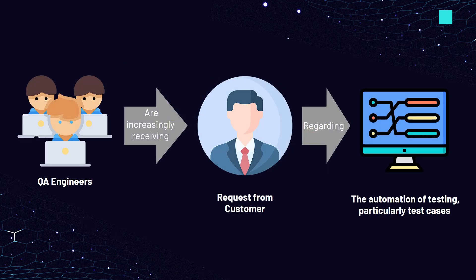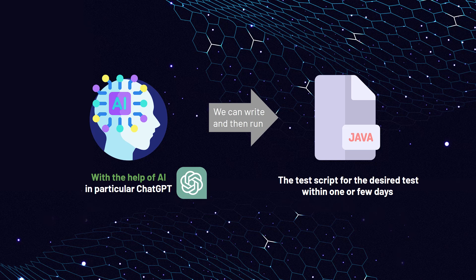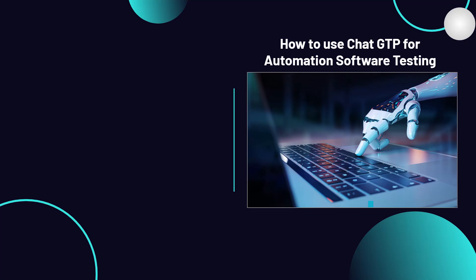These lectures cover the manual part of the course. However, it's just halfway through the journey. In today's world, manual testers are increasingly receiving requests from clients regarding the automation of testing, particularly test cases. Of course, to become a QA automation engineer, you need to start your QA career from scratch and gain deep knowledge in this area. However, with the help of AI, particularly ChatGPT, a manual QA engineer can learn how to successfully write and then run the test script for the desired test case within one or a few days. For that reason, we have prepared the next part of the course, which is about how to use ChatGPT for automation software testing.